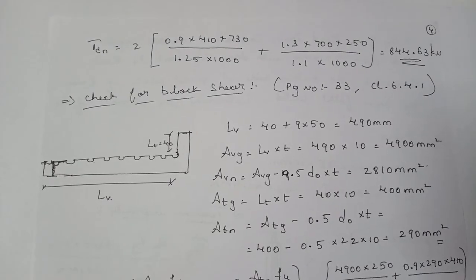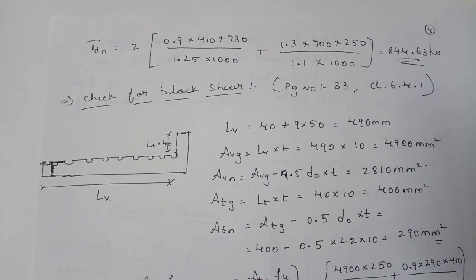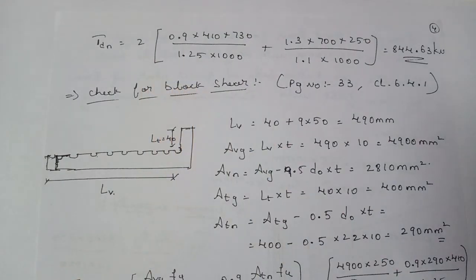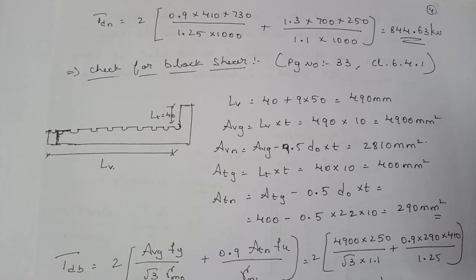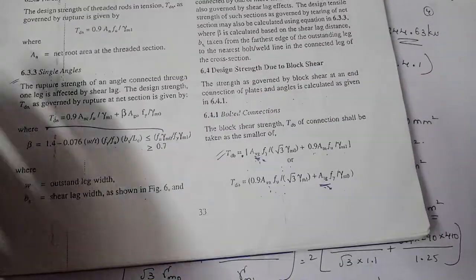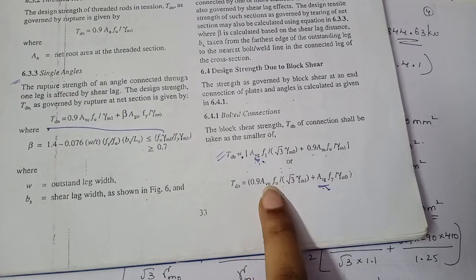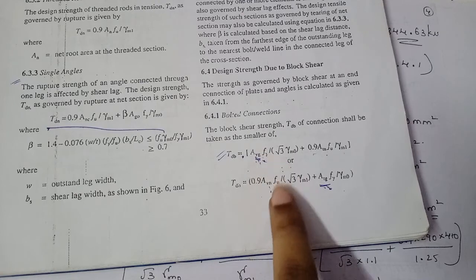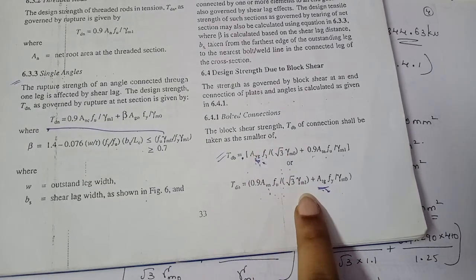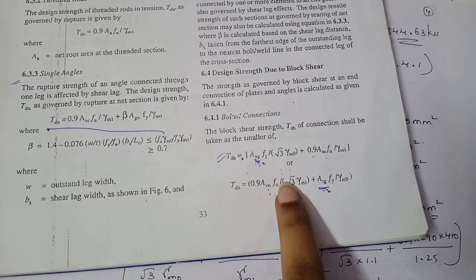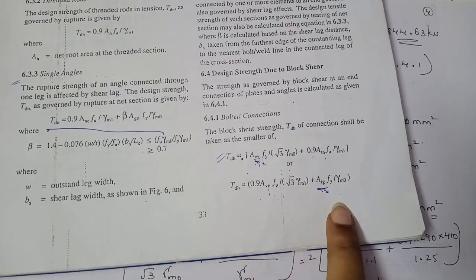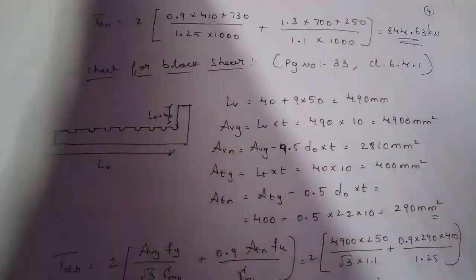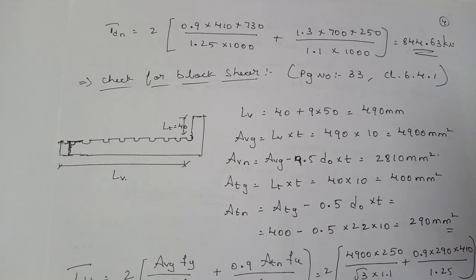Tdn = 2 × (0.9 × Anc × fu/γm1 + β × Ago × fy/γm0). Substituting all values gives Tdn = 844.63 kN. The factor of 2 accounts for the double angle section, since the code equation is for a single angle. Next, we check block shear, found in the code book page 33, clause 6.4.1. Two equations are provided; the lesser value governs. Again, the entire equation is multiplied by 2 for a double angle section.